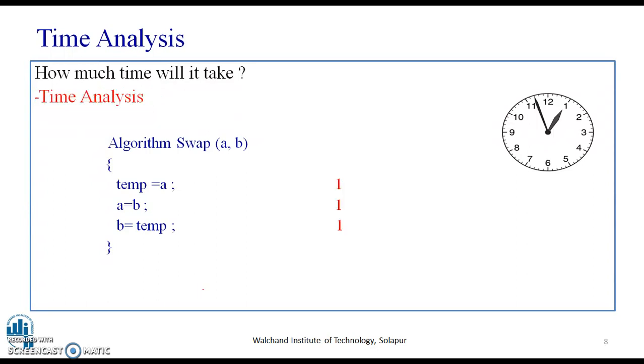Consider this statement. If we see, this statement requires one unit of time. Temp equals A, A equals B requires one unit of time. B equals temp again requires one unit of time. Therefore, this entire algorithm swap requires three units of time. That is, function f of n is equal to three units of time.